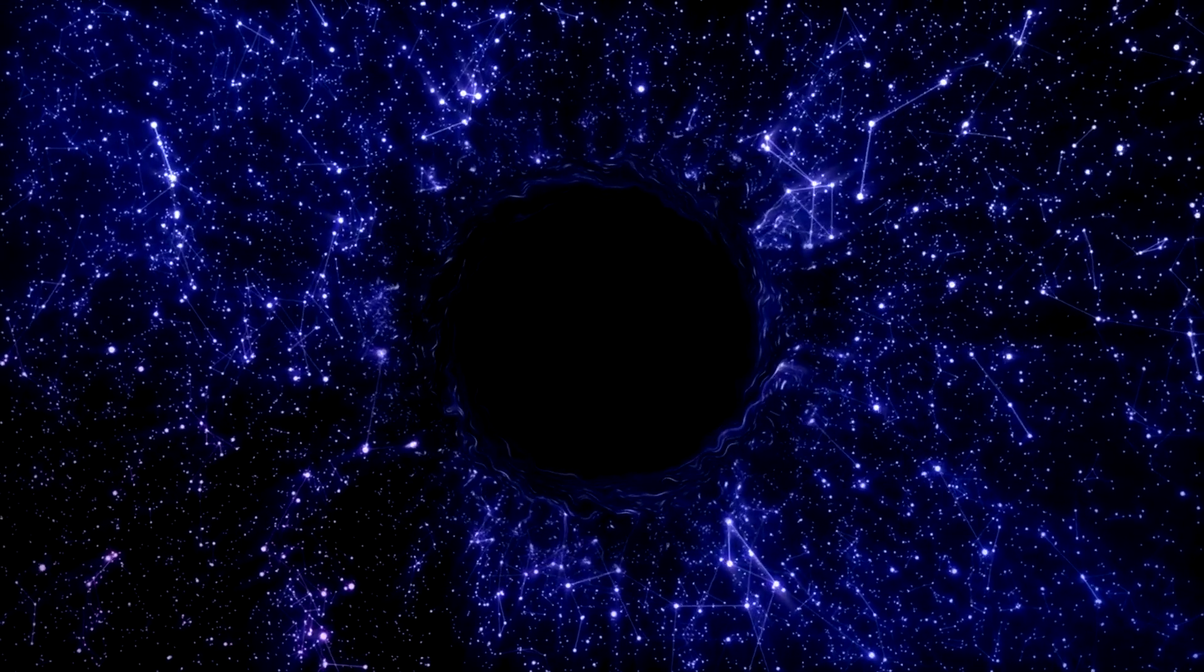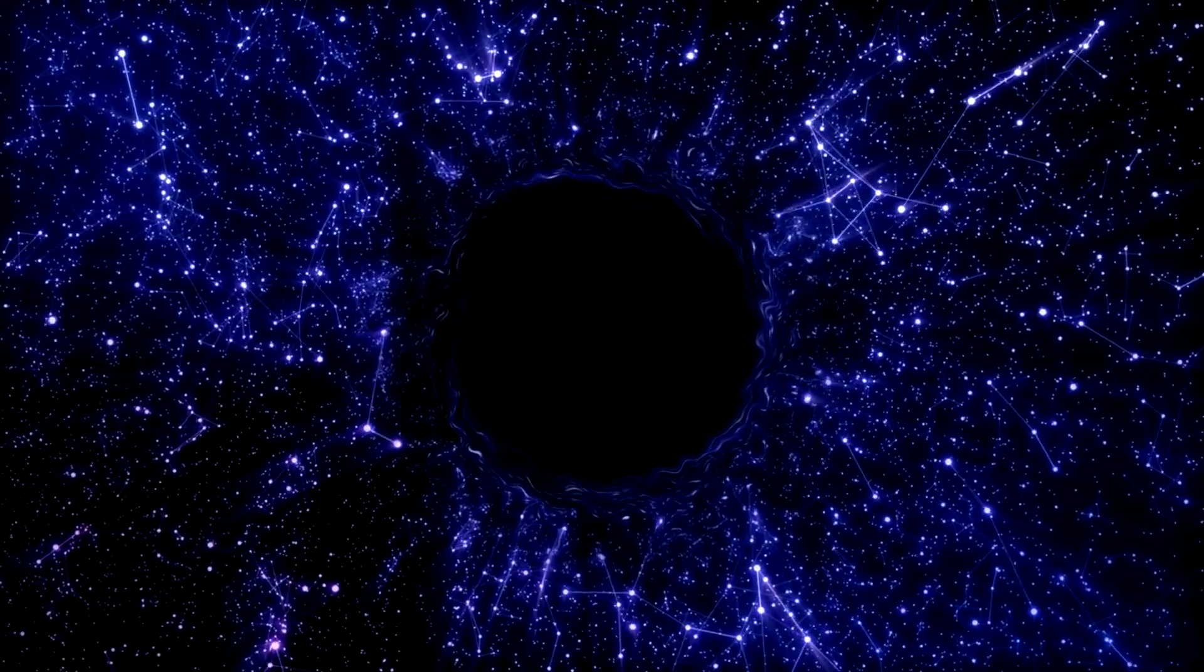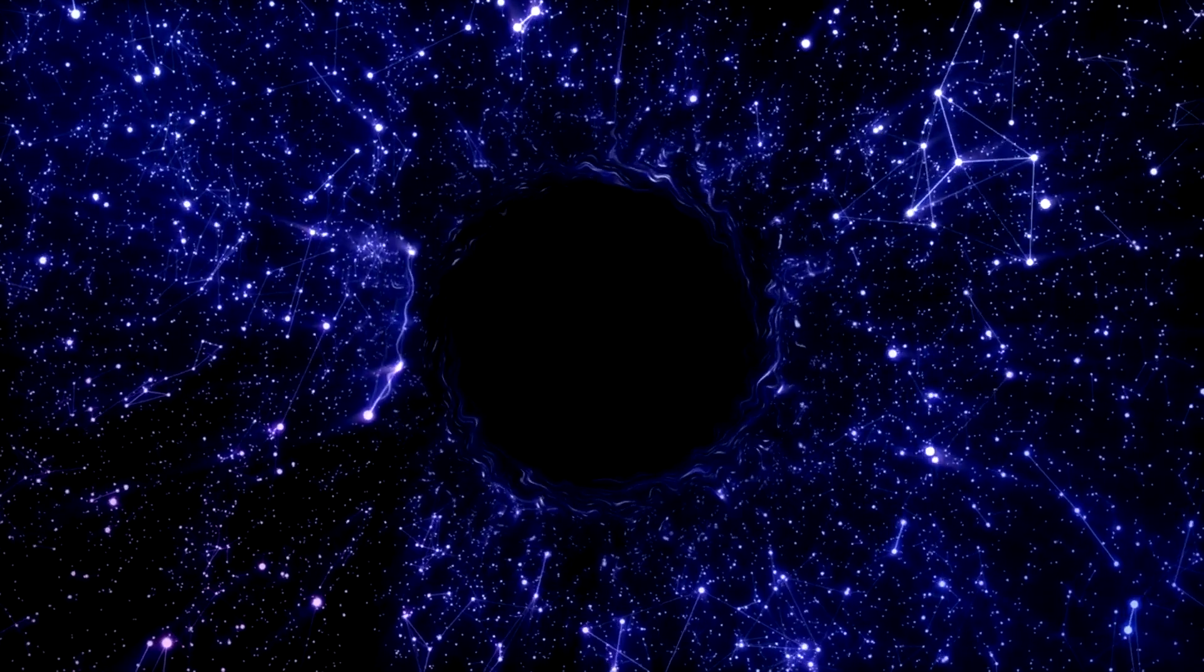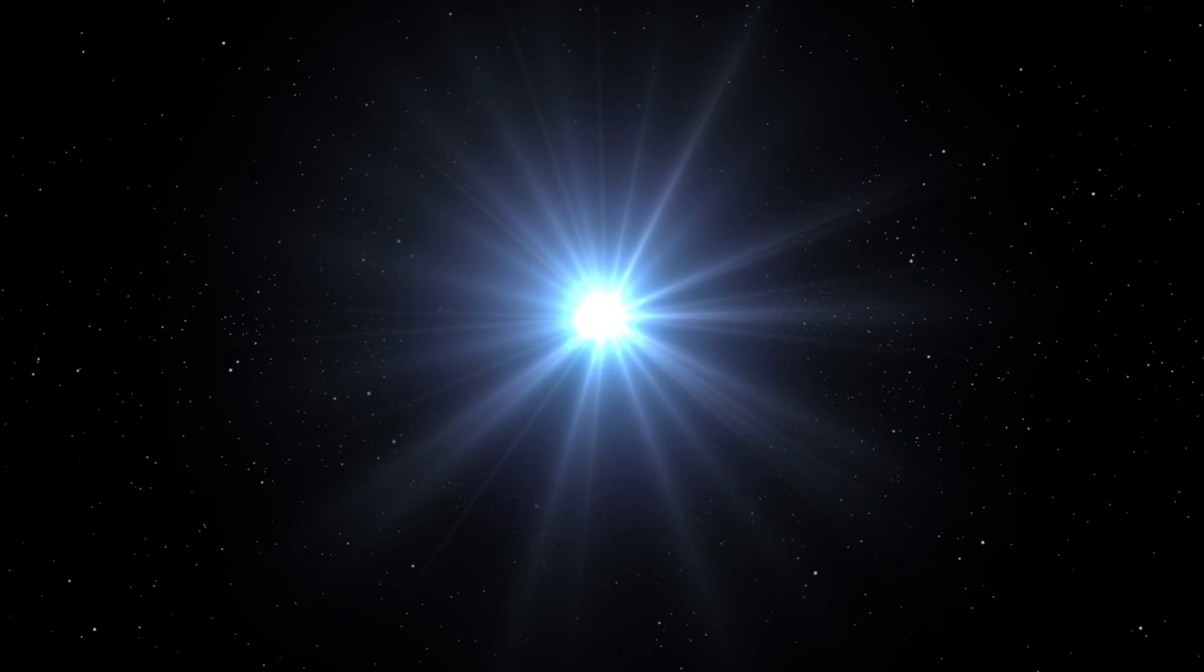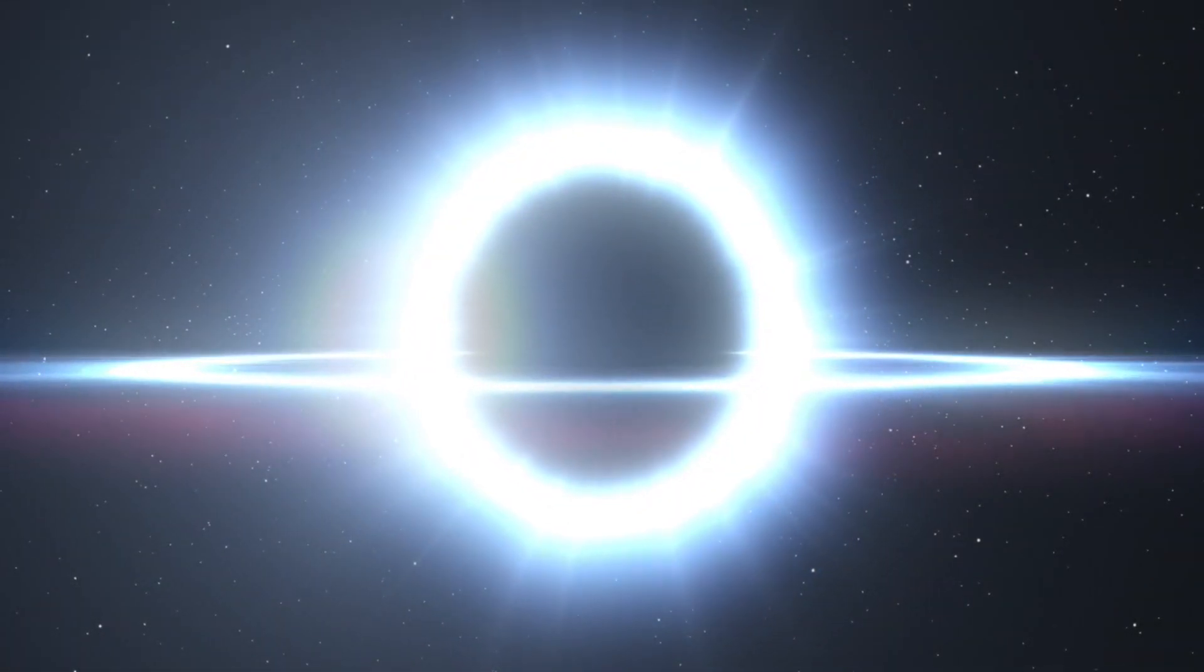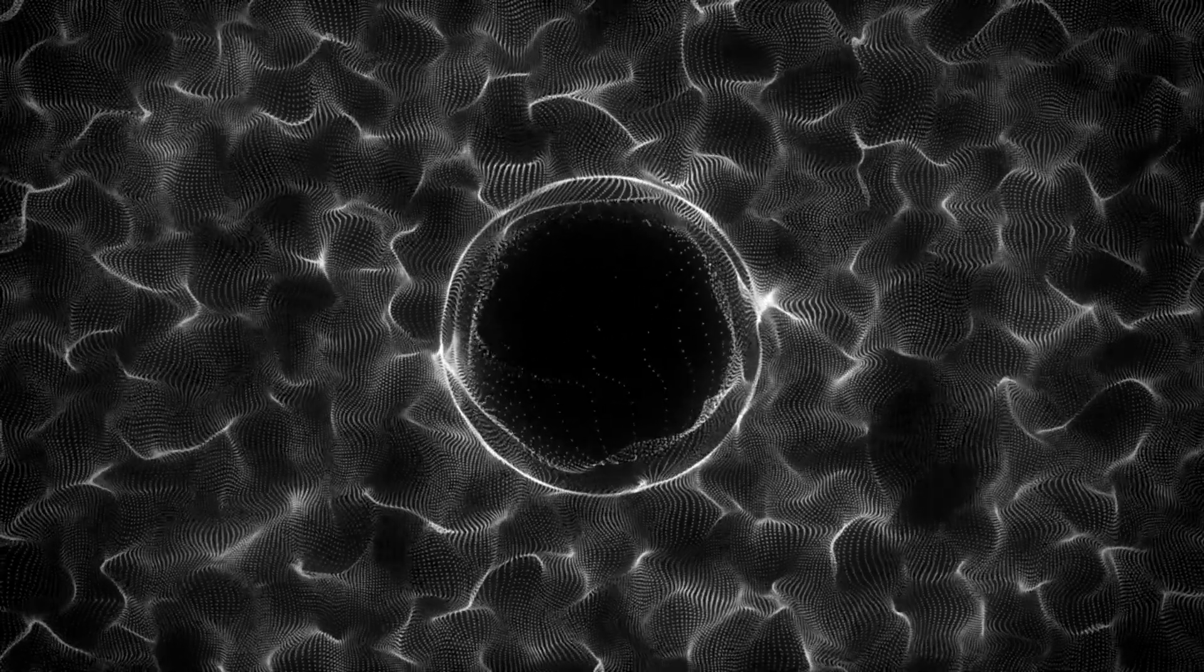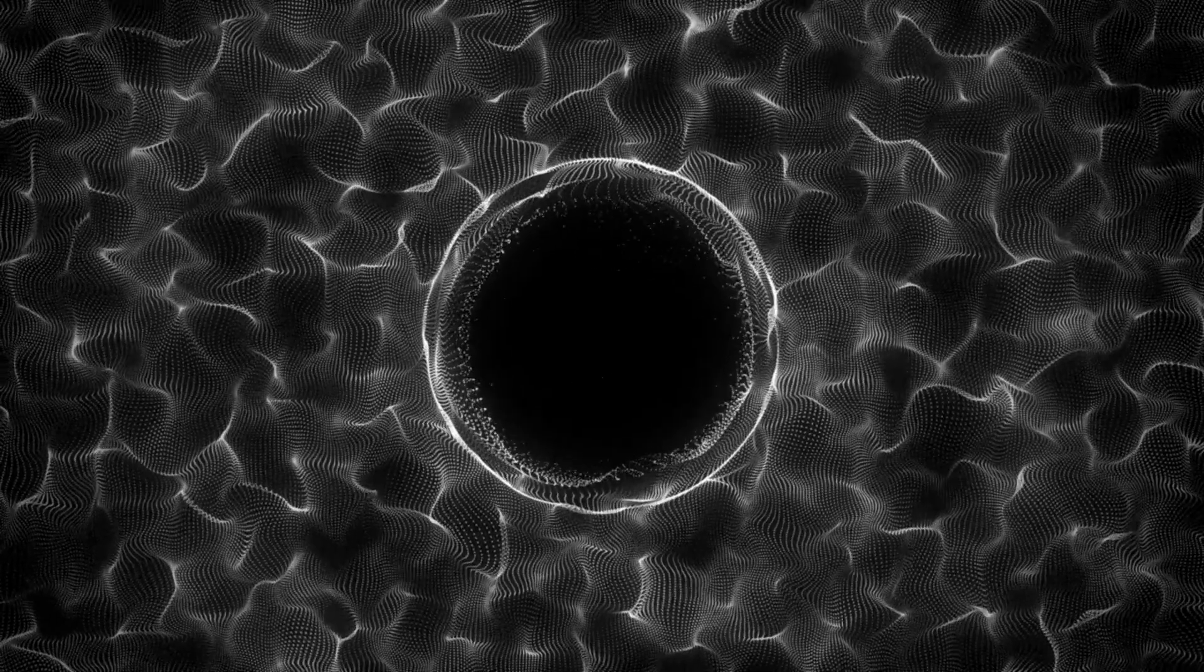The black hole in Cygnus X-1 has an estimated mass of about 15 solar masses, placing it in the category of stellar mass black holes. These black holes are formed when massive stars exhaust their nuclear fuel and undergo supernova explosions, leaving behind a core that collapses to become a black hole. Its eventual identification as a black hole marked a watershed moment in astrophysics.